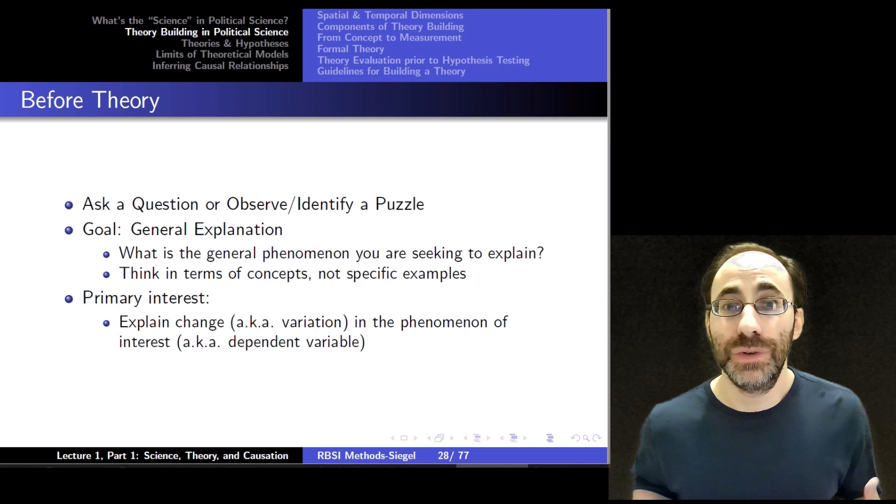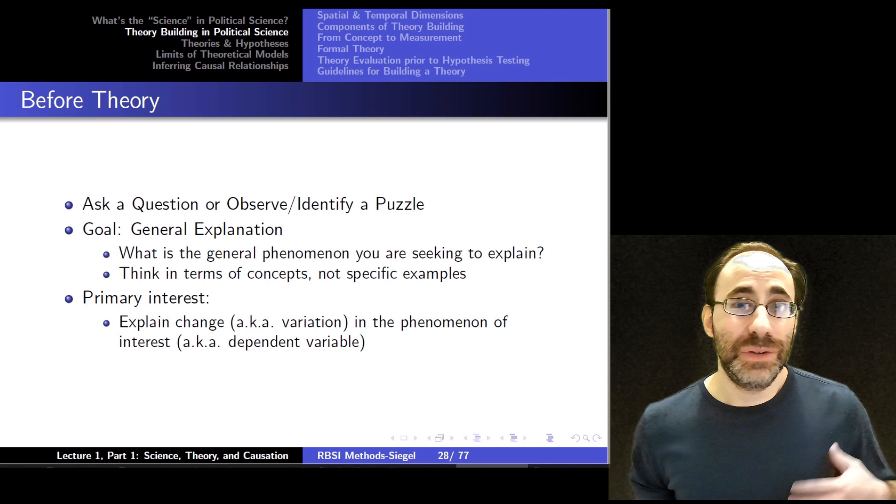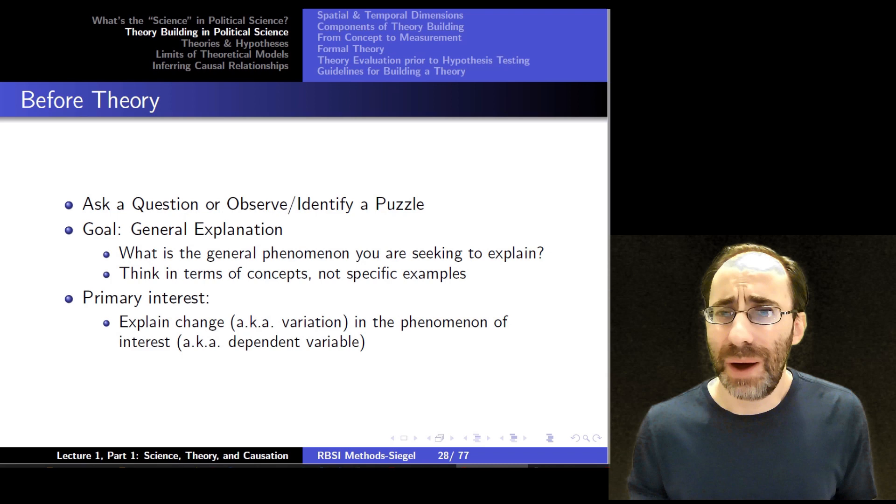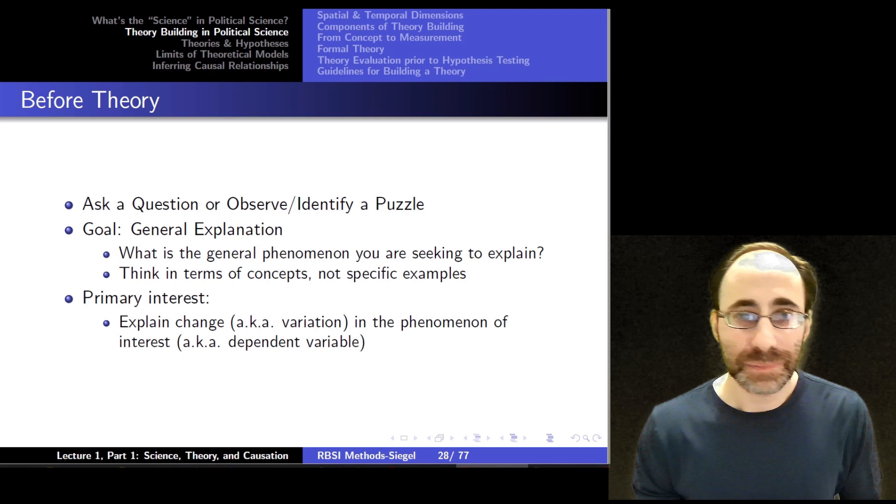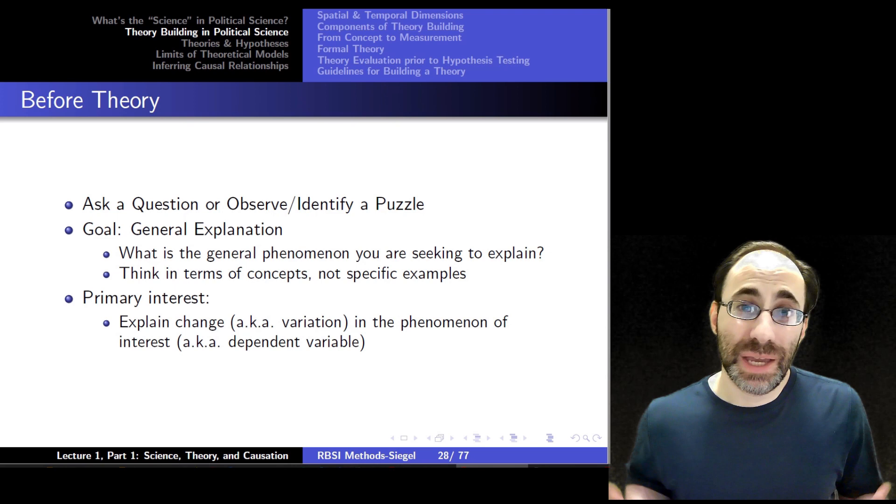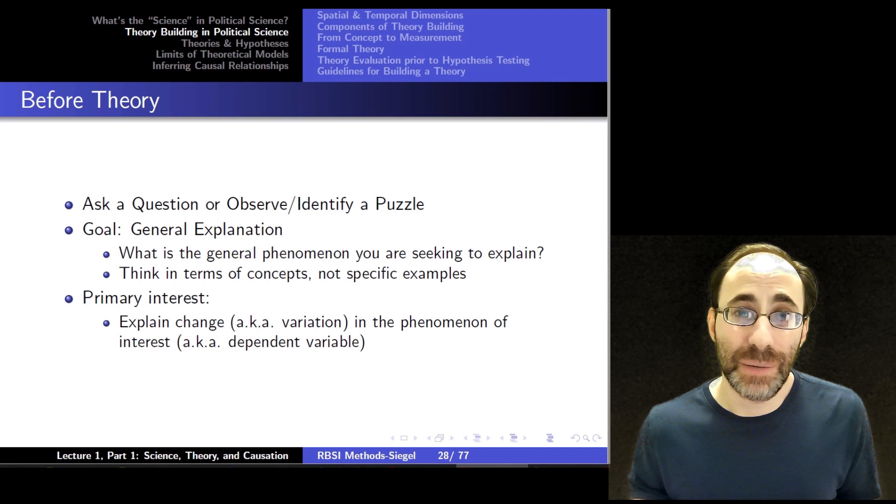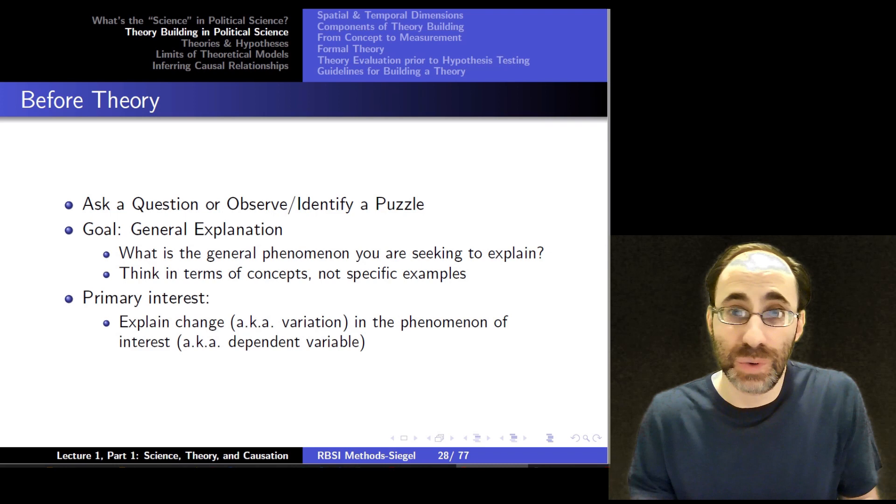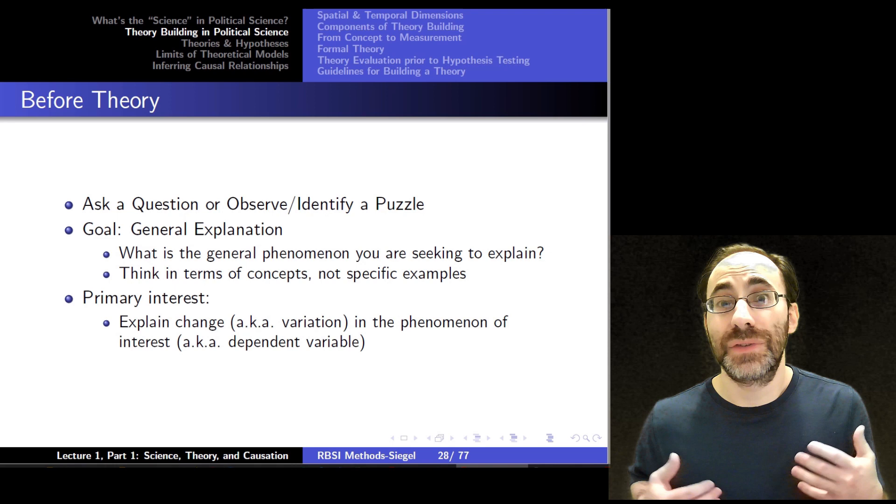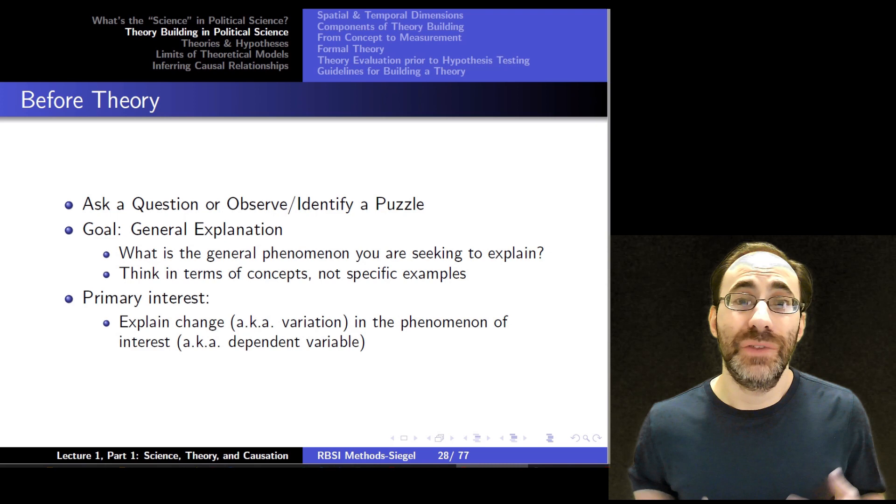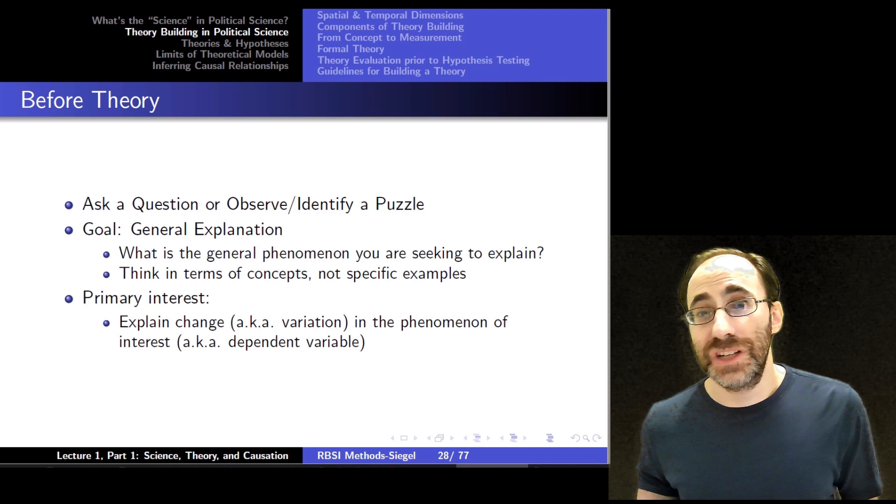Before we even get to theory building, we need to understand what we're looking at. What are our research questions? This usually starts by asking a question about the world. Maybe from observation you develop some question, you want to understand how something works. Maybe you identify a puzzle, you see something strange, you don't know why it happens that way, and you want to figure out why. Our goal, regardless of your motivation for that question, is to obtain some kind of general explanation of the causal relationship. We're going to try to understand the general phenomenon you're seeking to explain. When you do this, you want to think in terms of concepts, not specifics. Our goal is to create generalized explanations of the world, of how a causal relationship works in general.